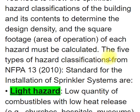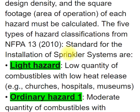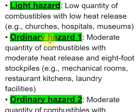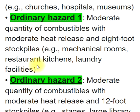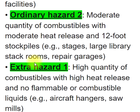The five types of hazard classifications from NFPA 13 (2010 standard for the installation of sprinkler systems) are: Light Hazard — low quantity of combustibles with low heat release, e.g., churches, hospitals, museums. Ordinary Hazard 1 — moderate quantity of combustibles with moderate heat release and 8-foot stockpiles, e.g., mechanical rooms, restaurant kitchens, laundry facilities. Ordinary Hazard 2 — moderate quantity of combustibles with moderate heat release and 12-foot stockpiles, e.g., stages, large library stack rooms, repair garages.